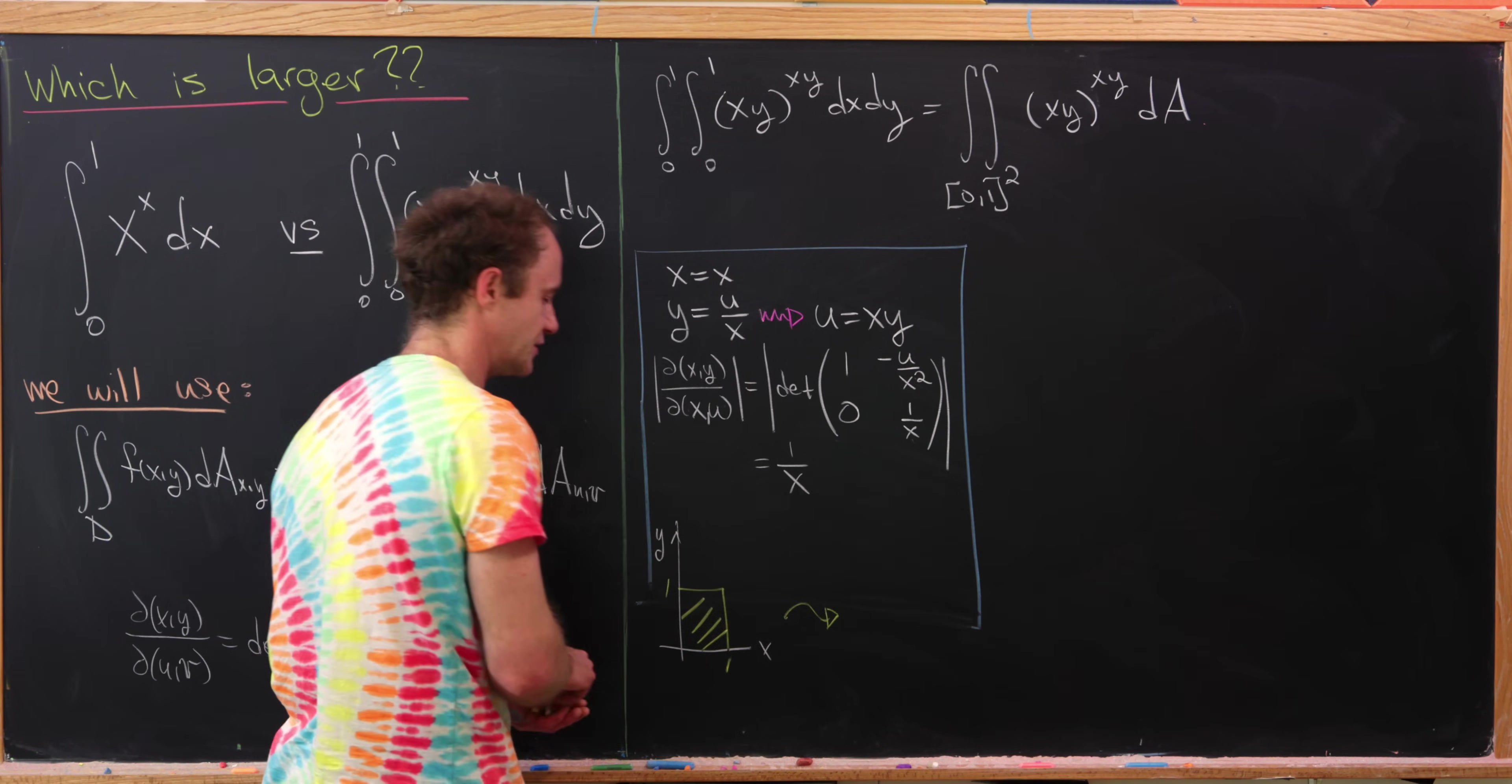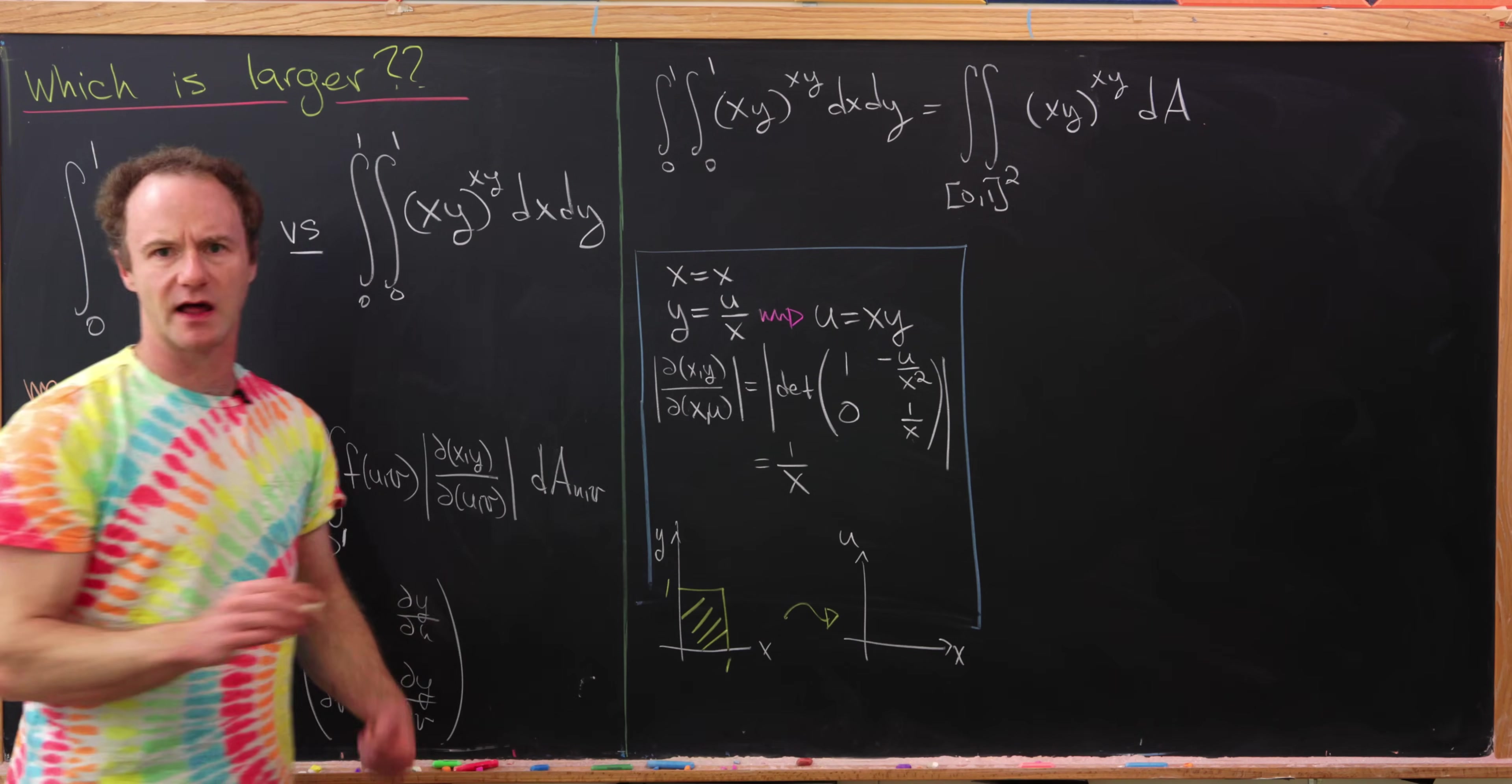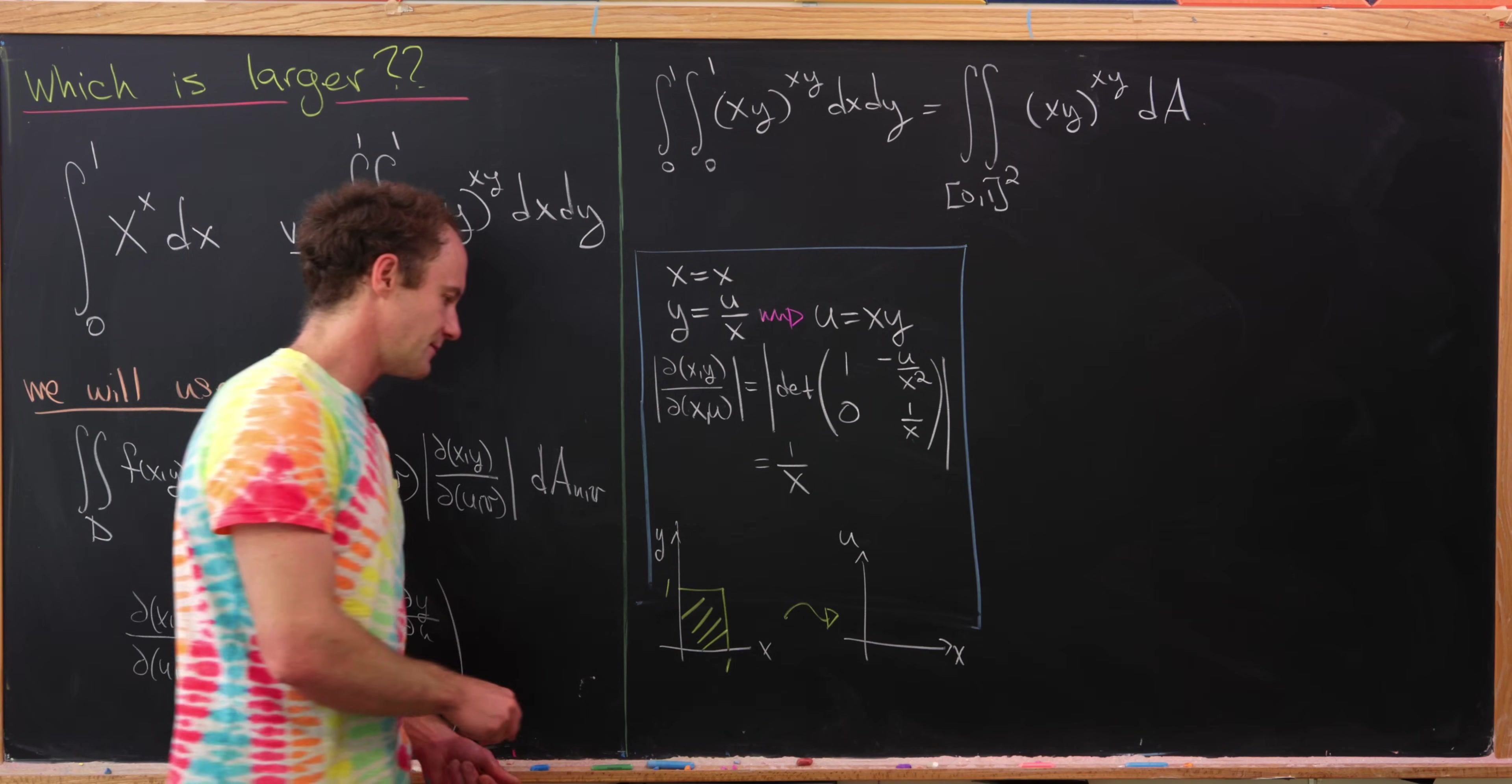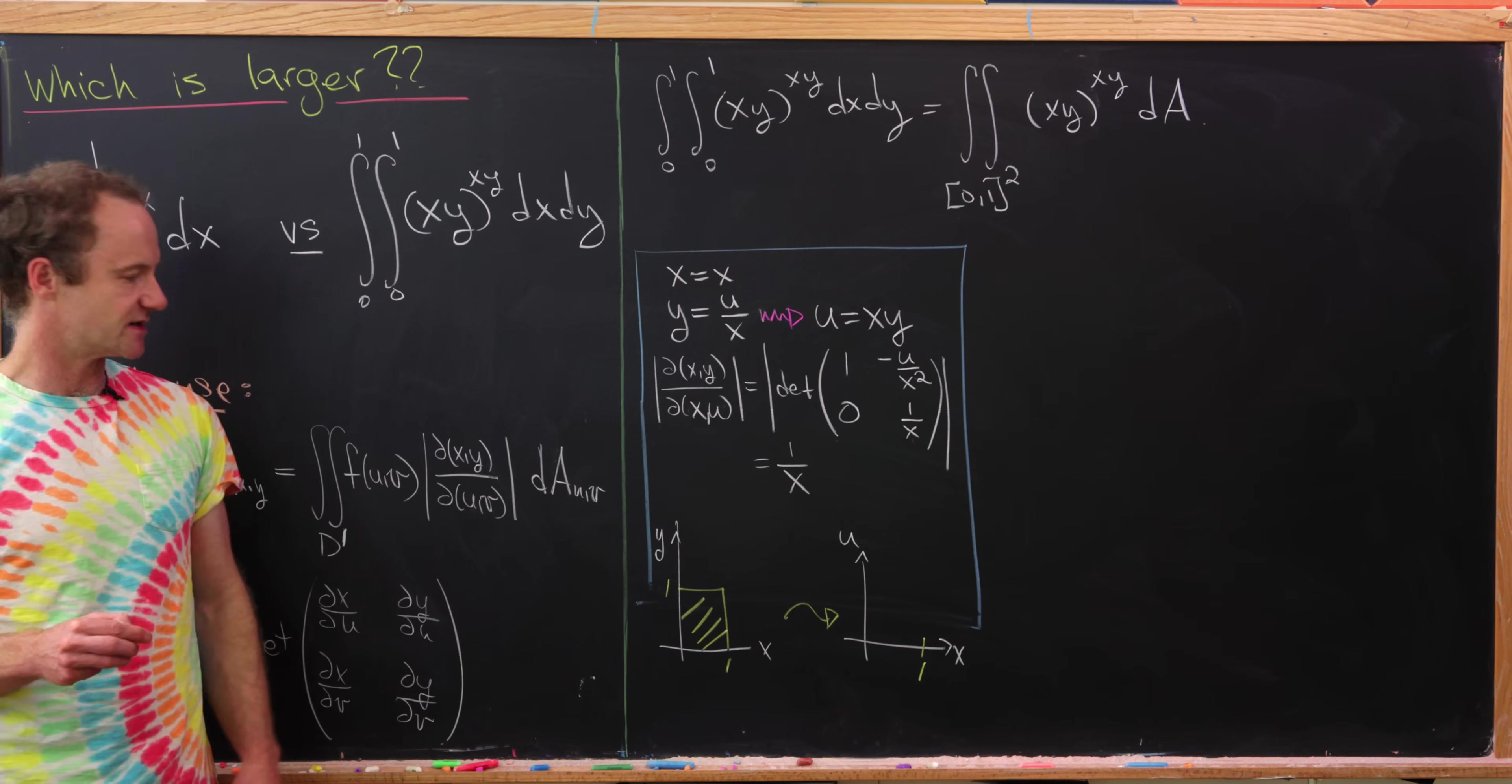So now what happens if we pass to, well, it's not exactly a u, v plane, it's an x, u plane, given the new variables that we're using. That means that we'll still go from 0 to 1 along the x-axis because we're reusing that axis.